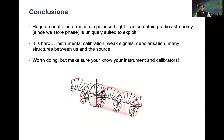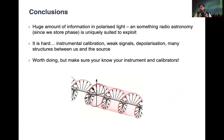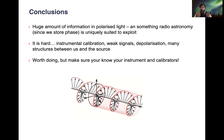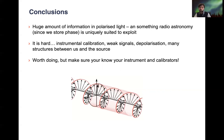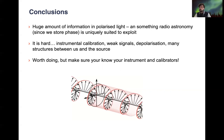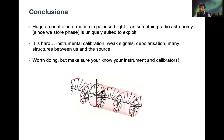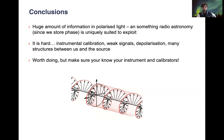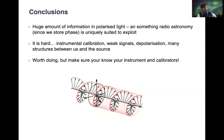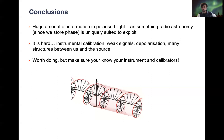To conclude: polarization can be intimidating, but this lecture is just an introduction to the concepts — a more advanced topic than unit four usually covers. There is a huge amount of information in polarized light and radio astronomy is uniquely suited to exploit it. But it is hard — instrumental weak signals, depolarization, and many structures between us and the source all make measurements very difficult and require a lot more calibration. That's why many astronomers don't tend to do it, but it's worth doing if you understand your instrument and calibrators. I hope you've enjoyed this lecture and are enjoying the course thus far.